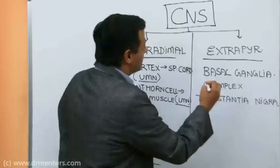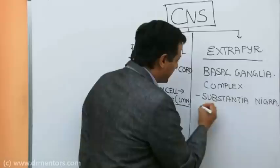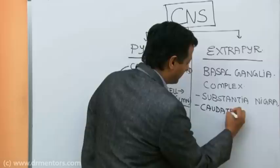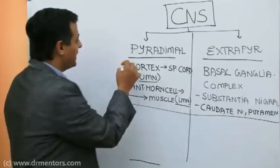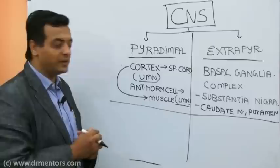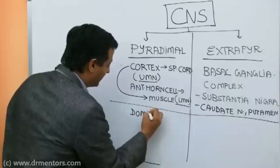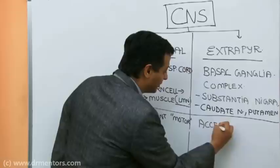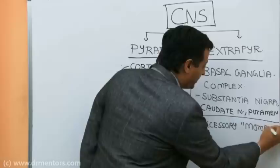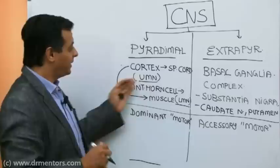The extrapyramidal system consists of the basal ganglia complex, which includes the substantia nigra, the caudate nucleus, and the putamen. The pyramidal system is called the dominant motor pathway, while the extrapyramidal is called the accessory motor pathway.